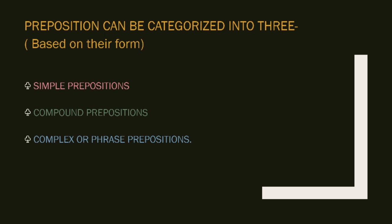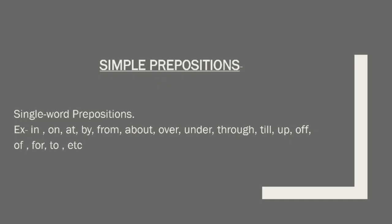Simple prepositions are single-word prepositions. Examples include: in, on, at, by, from, about, over, under, through, till, up, off, for, to, etc. These are all single-word prepositions, and that is what makes them simple prepositions.